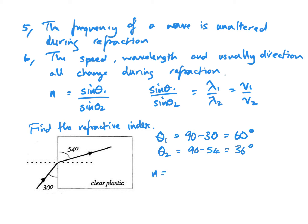Theta 2 is in the medium so it's 90 minus 54. Then our formula is n equals sine theta 1 over sine theta 2, sine 60 over sine 36, and plug it into our calculator and we get the refractive index is 1.47.